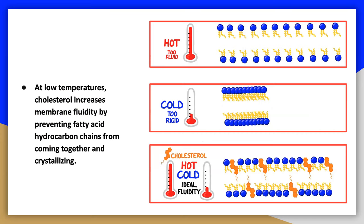At high temperatures, cholesterol decreases membrane fluidity and increases the melting point. For example, the temperature of a car's engine is modulated by water circulating with antifreeze, which lowers the freezing point so it does not freeze in winter and raises the boiling point in summer so the engine does not overheat. Cholesterol does a similar thing in cells and acts like antifreeze.